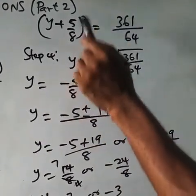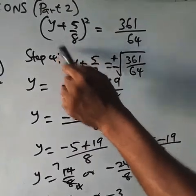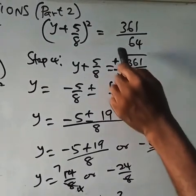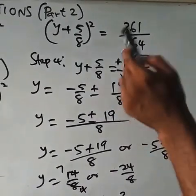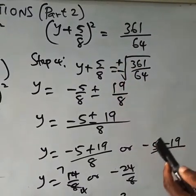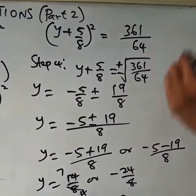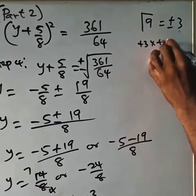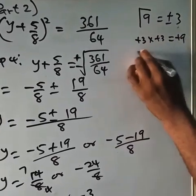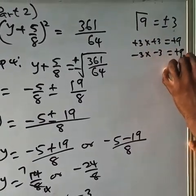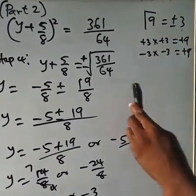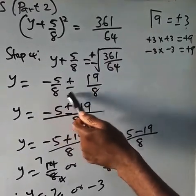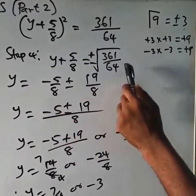Step 4: remove the square by taking the square root of both sides. So y plus 5 over 8 equals plus or minus the square root of 361 over 64. We use plus or minus because the quadratic equation has two roots — for instance, the square root of 9 is plus or minus 3, since both (+3)(+3) and (−3)(−3) equal 9. The square root of 361 is 19, and the square root of 64 is 8.